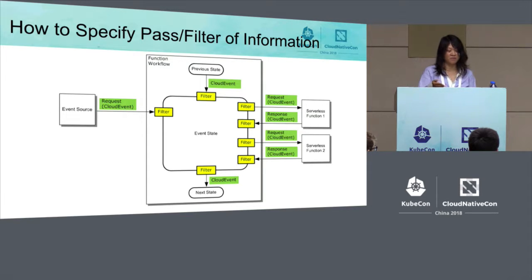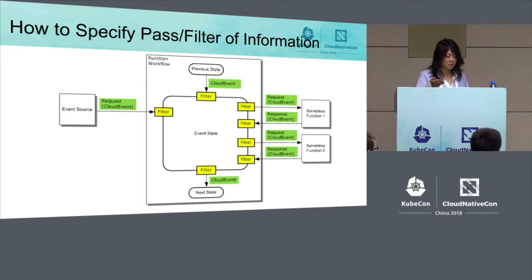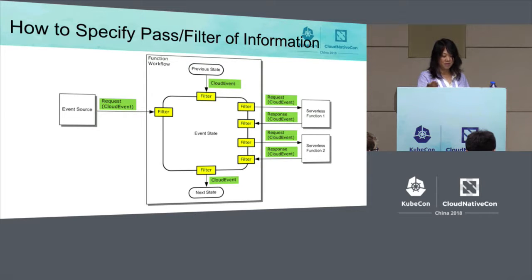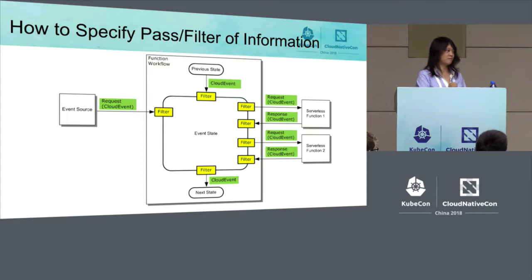This diagram shows how to specify information passing and filtering. You can put a filter between an event and the state to filter the event data. You can also specify a filter for information from the previous state to the current state, or from one function to the next function, or from the current state to the next state. These are all optional — you can specify whatever you like, or not specify anything.